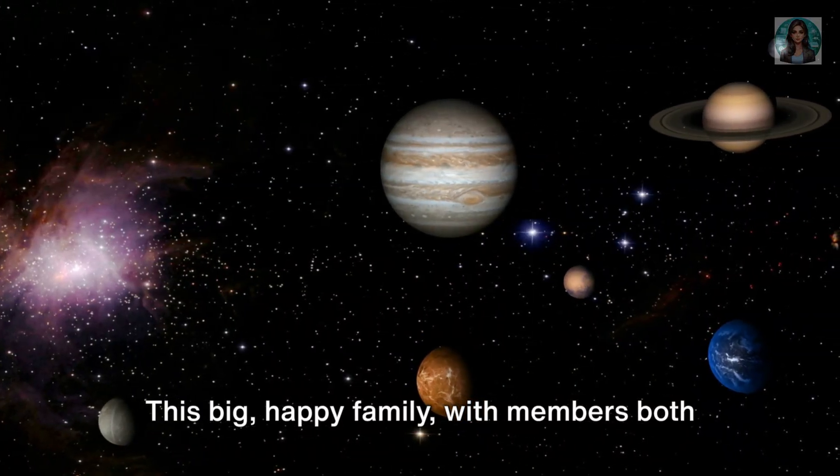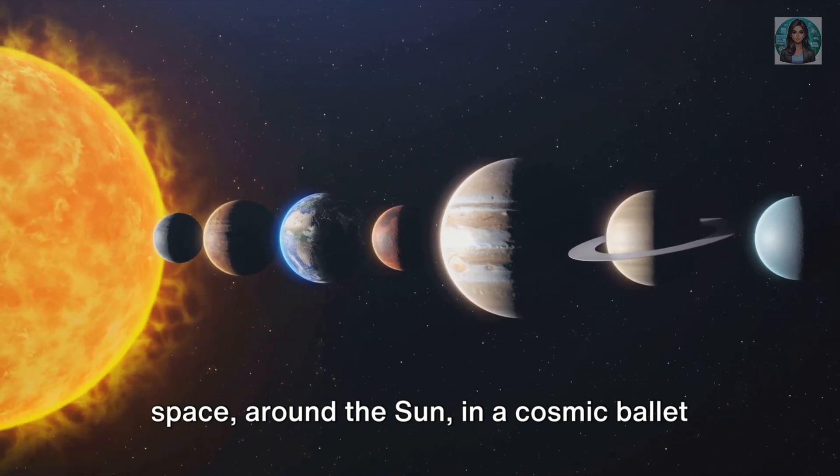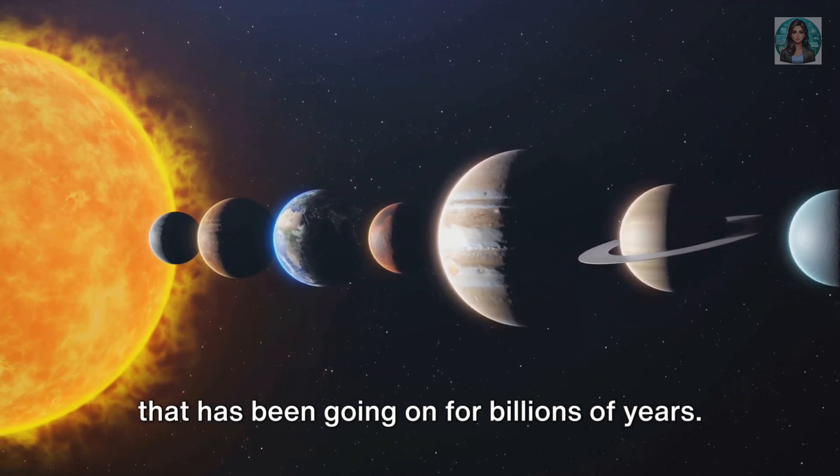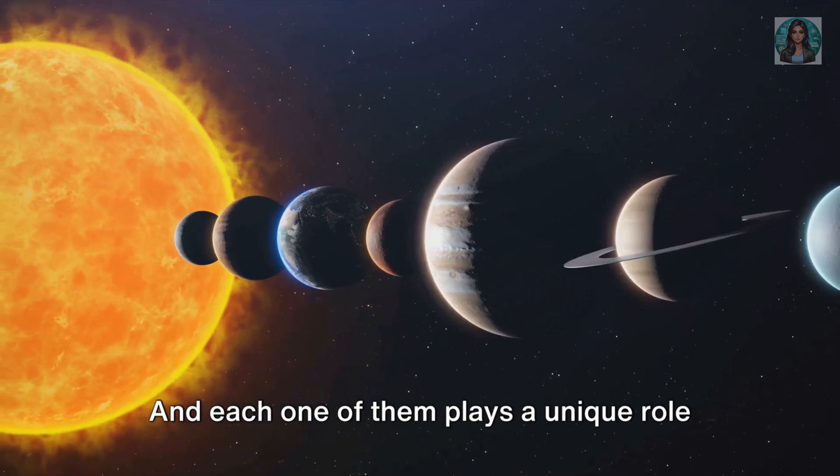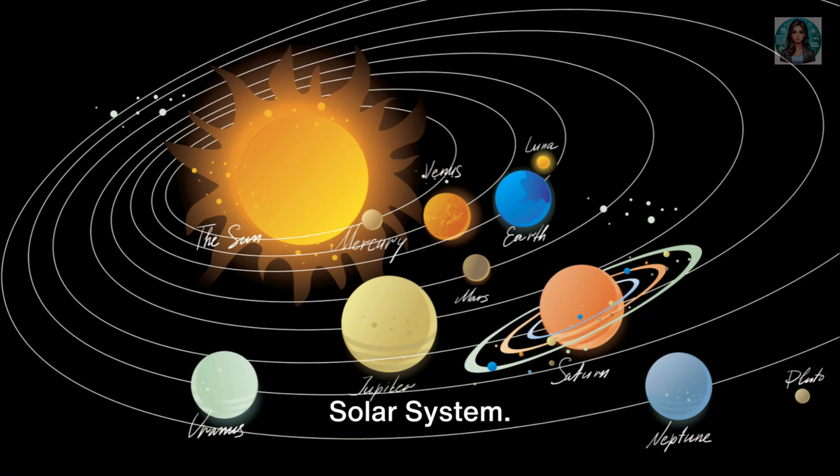This big happy family, with members both big and small, dances together through space around the sun in a cosmic ballet that has been going on for billions of years, and each one of them plays a unique role in this vast space we call home. Hope you enjoyed this journey through our solar system.